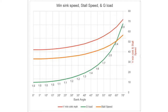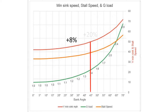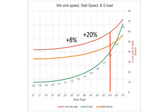So at 30 degrees, those speeds increase about 8%. At 45 degrees, it increases almost 20%, and at 60 degrees, over 40%. That's going to require you to go a lot faster.